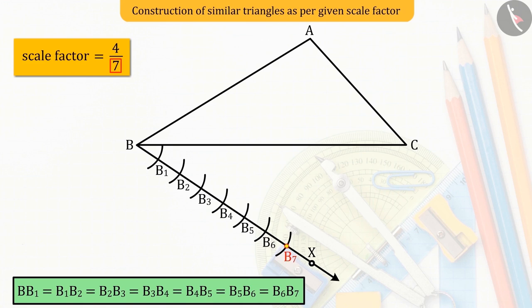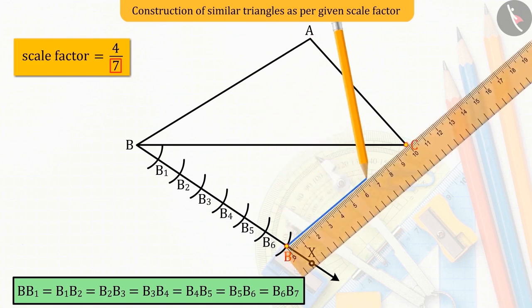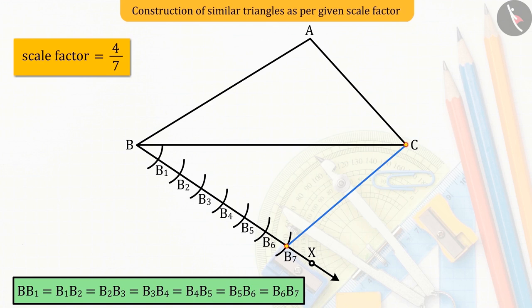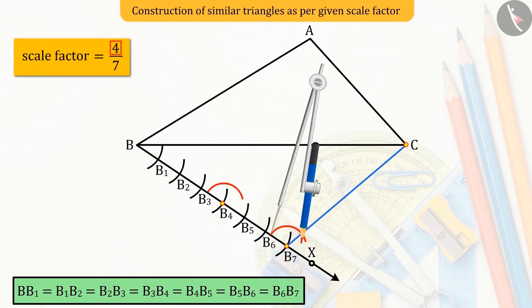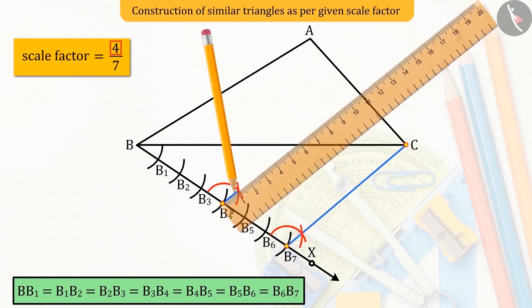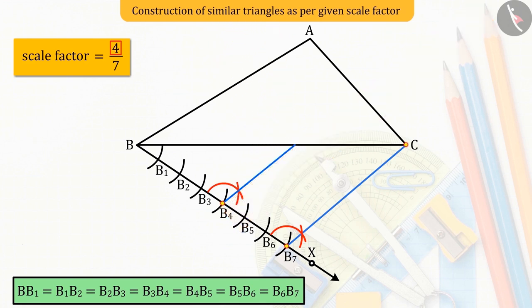After this, join the point B7 and point C. Now, we look at the smaller value of the scale factor, which is 4. So, from the point B4, we draw a line parallel to line CB7, which intersects the side BC of the triangle ABC on the point D.